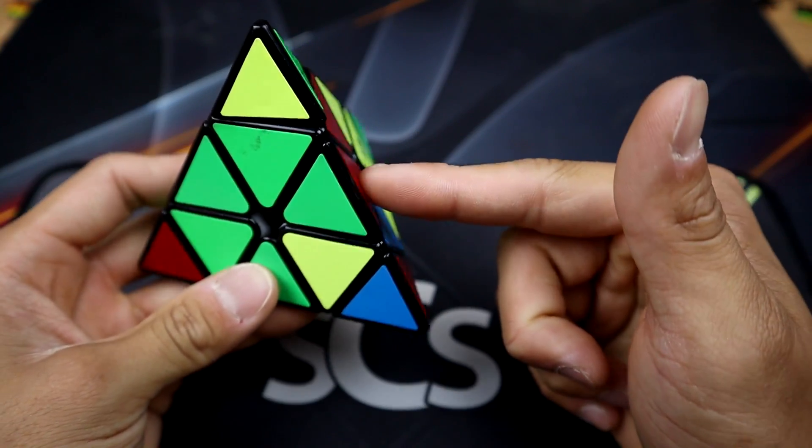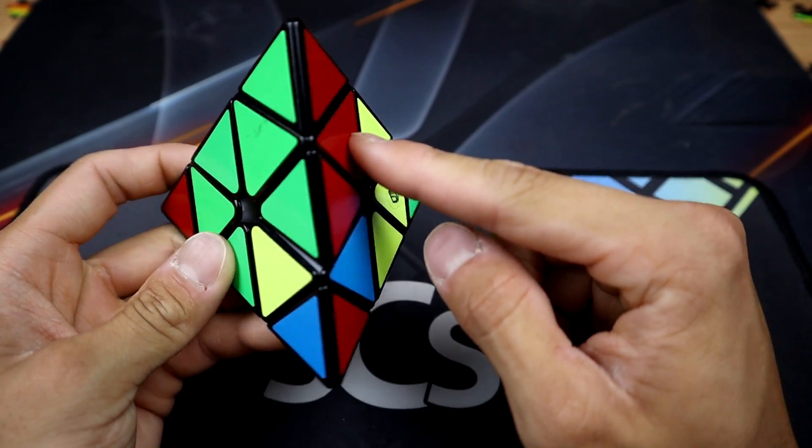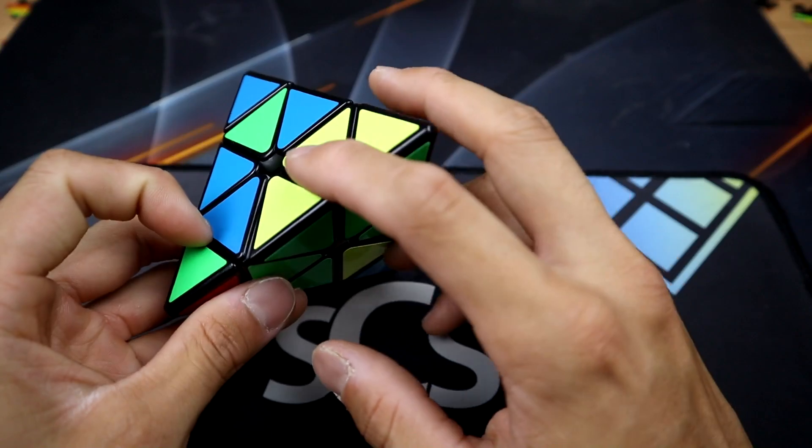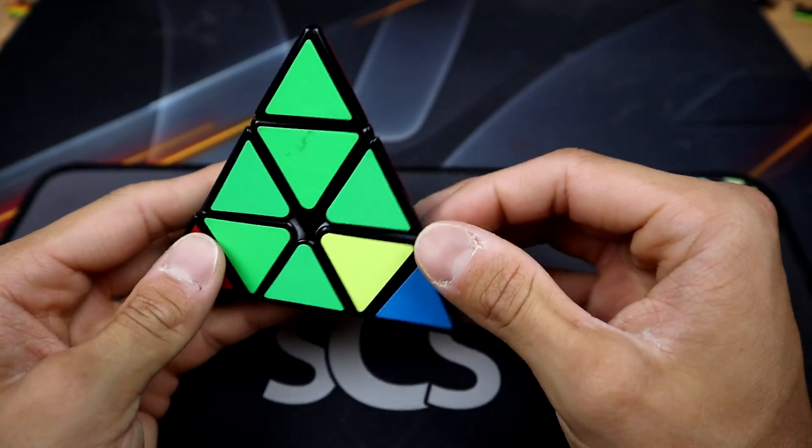Now at this point, when I have solved the two edges, I go ahead and move this tip like that. So this red, green, and yellow, there are two edges that are solved. And that is step number one.